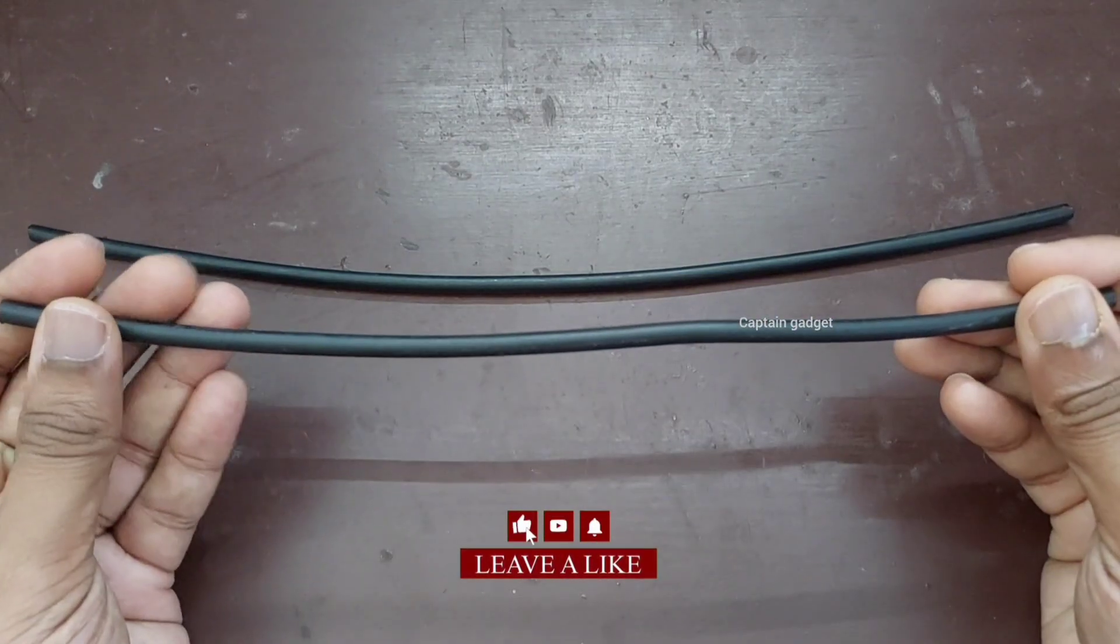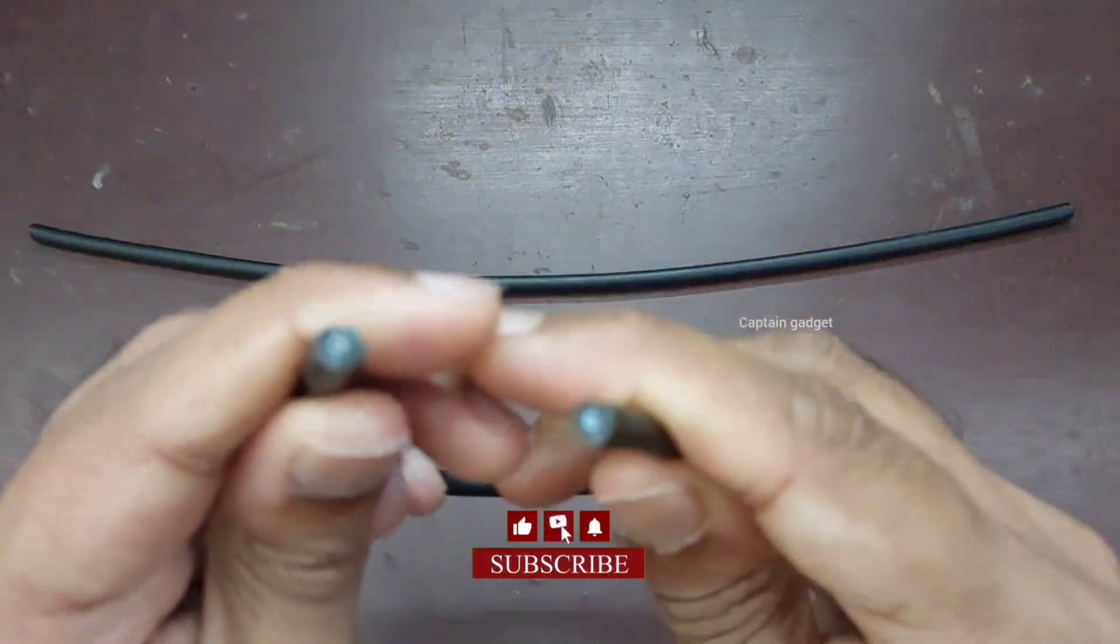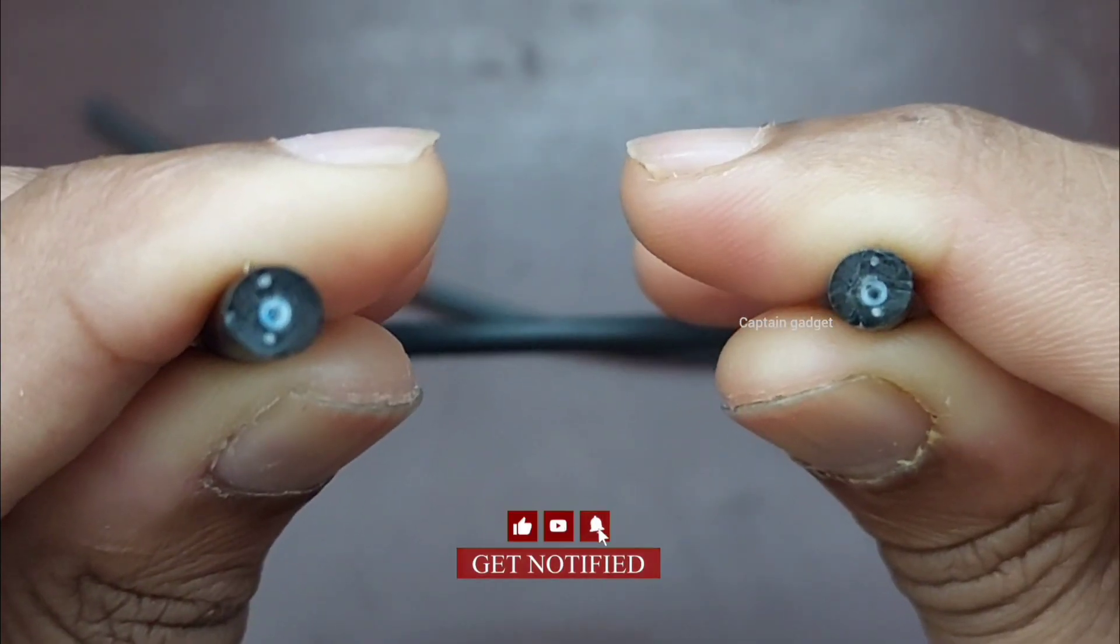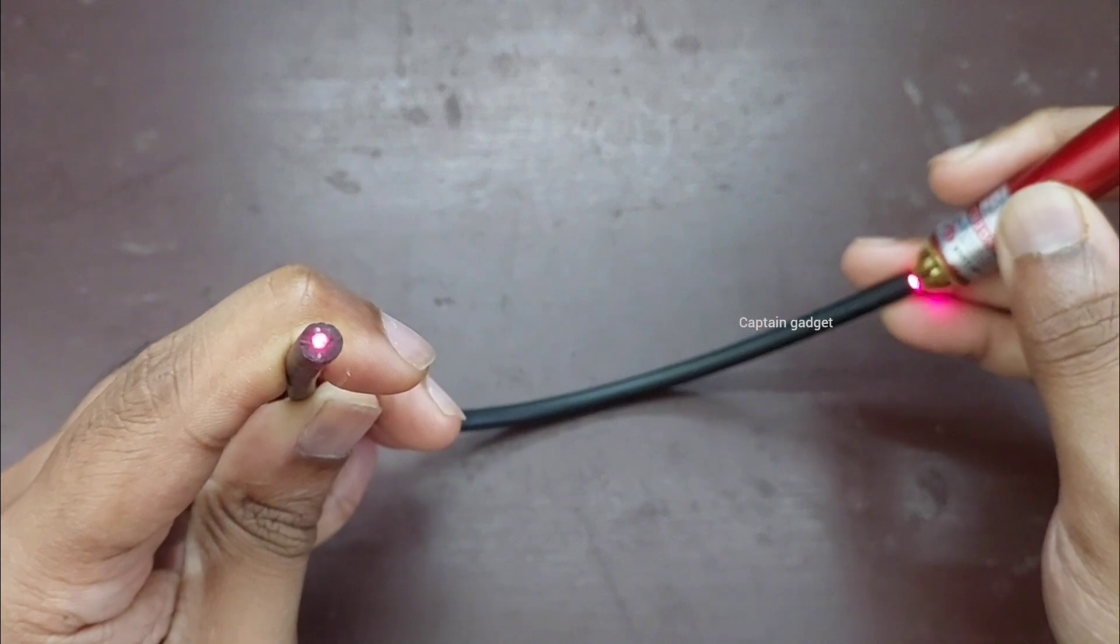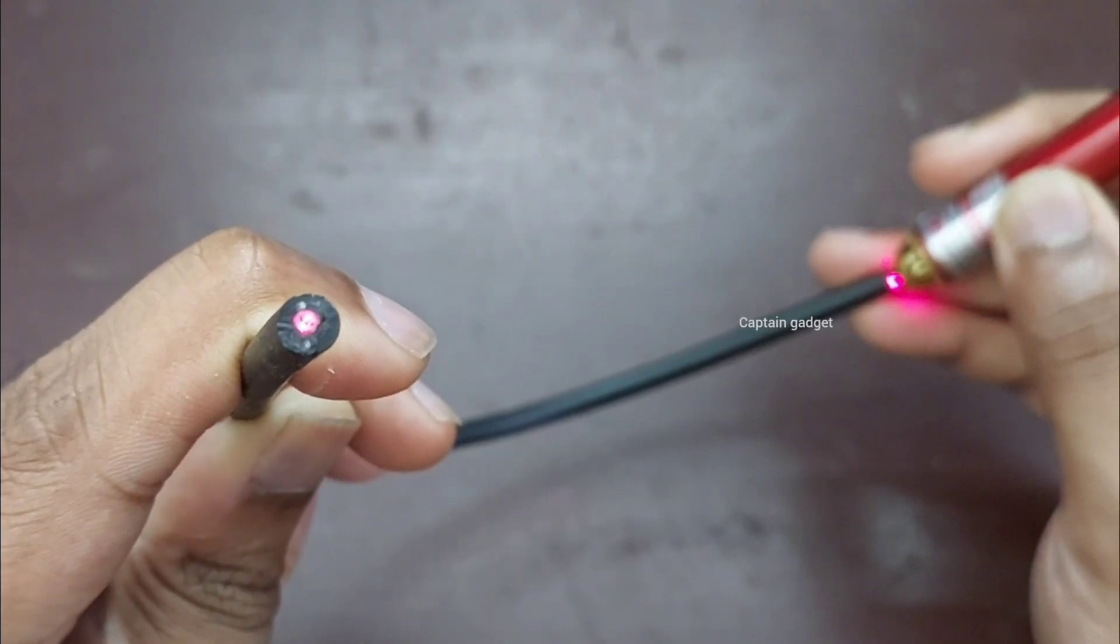This is a piece of optical fiber cable. You can see the cross-section. It transmits data in the form of light. If I light a laser on one side, you can see it glows on the other end.